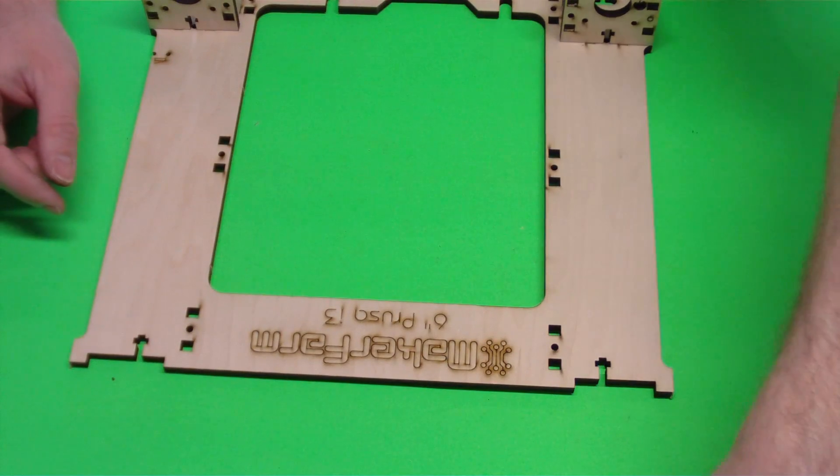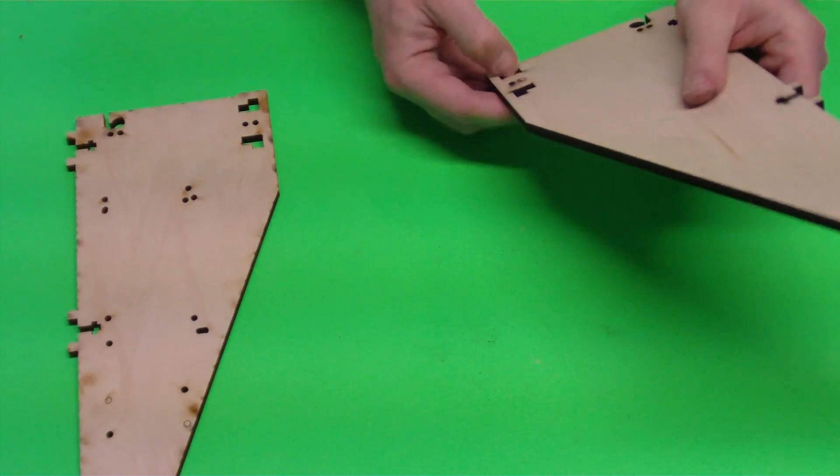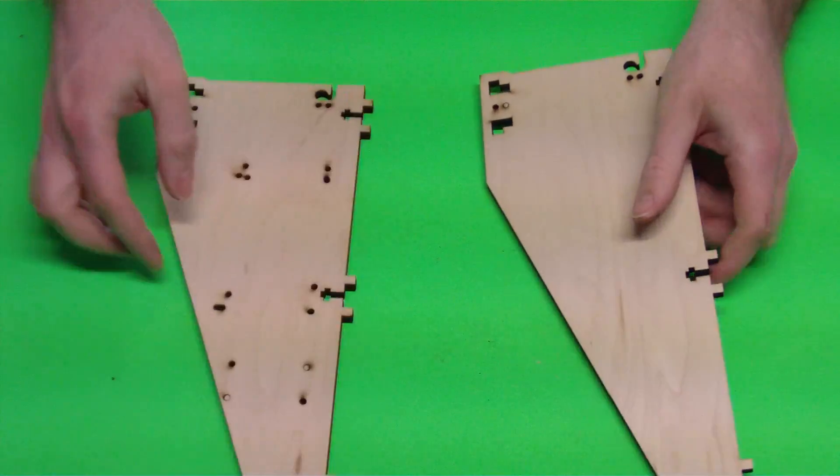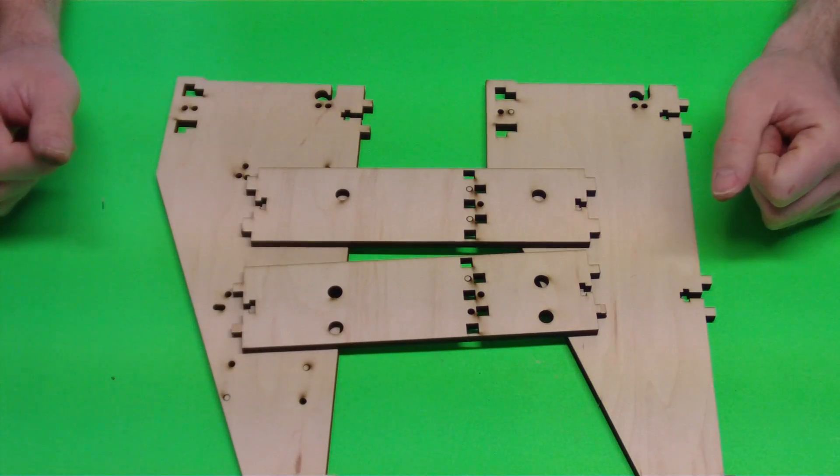The next part that we will get, we're going to take the frame and just kind of move it off to the side for now. The next pieces we're going to get are our outside pieces here. And we're going to go ahead and get these two plates here also.